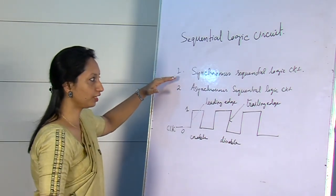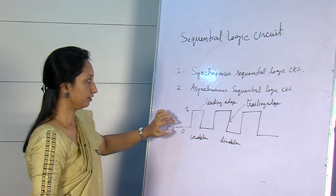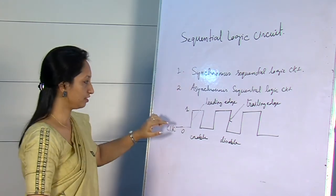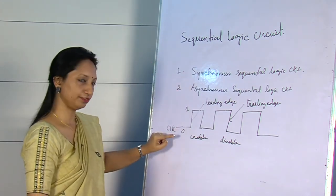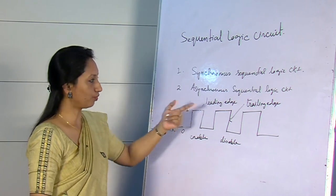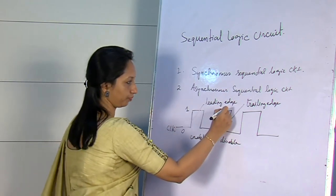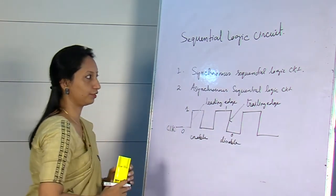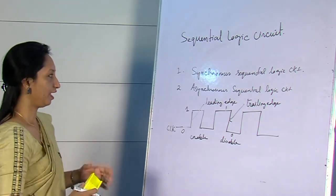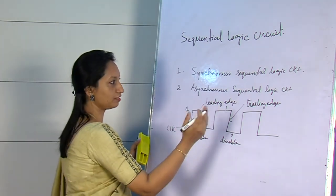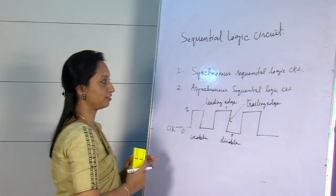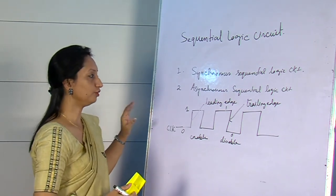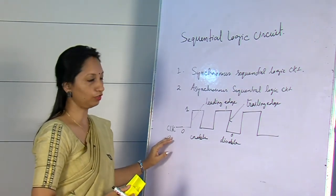In case of synchronous sequential logic circuits, the output changes — the state changes — during the transition, either from 0 to 1 or 1 to 0. In asynchronous logic circuits, there is no clock pulse or clock signal.